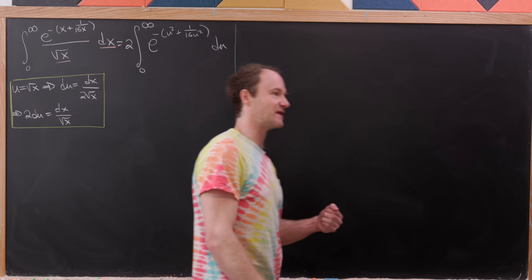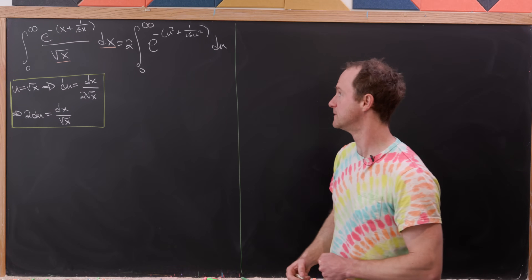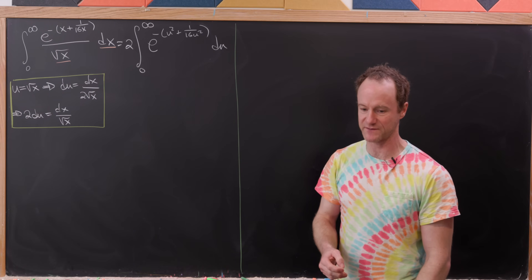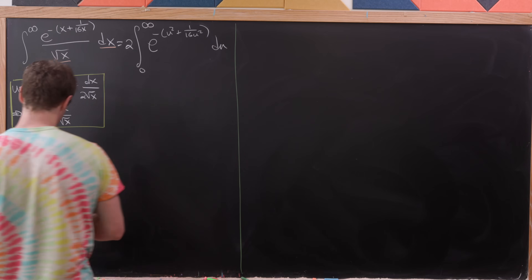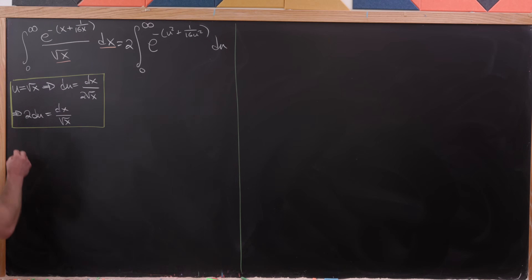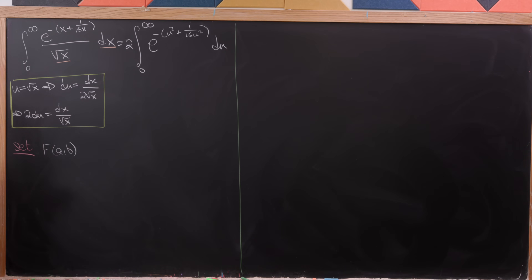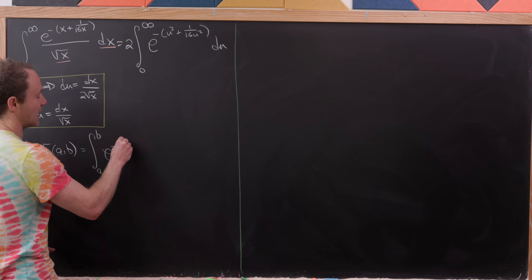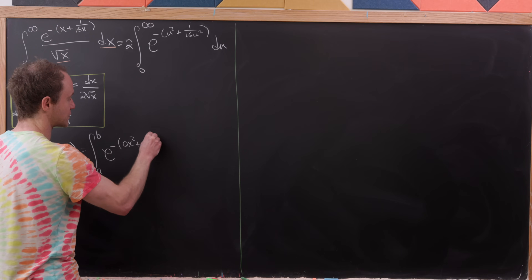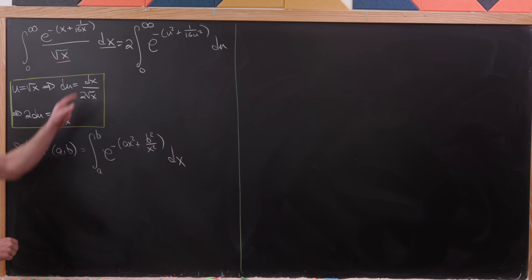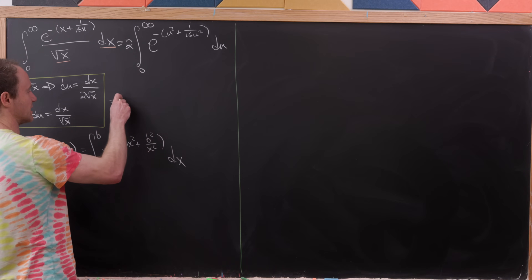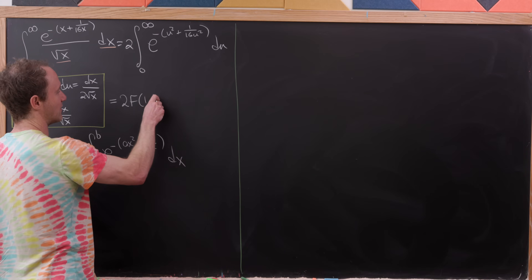We're not just going to evaluate this one integral; we're going to evaluate a whole family of integrals built off this form. Define f(a, b) as the integral from 0 to infinity of e to the minus quantity a times x squared plus b squared over x squared. Notice that our current integral is exactly this with a equal to 1 and b equal to one quarter, so the original integral equals 2 times f(1, 1/4).